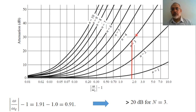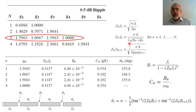The order n equals 3 satisfies the required condition for the attenuation at 2.2 GHz. So we now know the order of our filter is n equals 3. From the table of 0.5 dB ripple, we take the order n equals 3 and obtain G1, G2, G3, and G4.